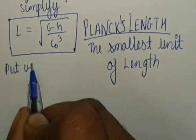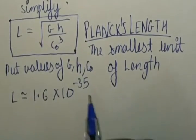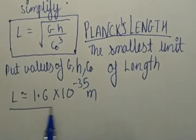Now put the values of G, h, and c₀, and we can get the exact value of Planck length in terms of SI units.